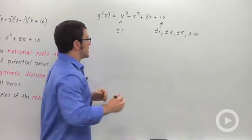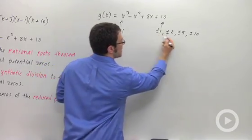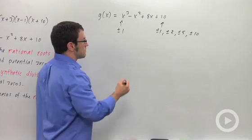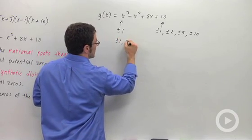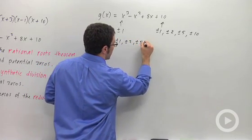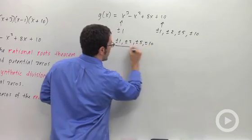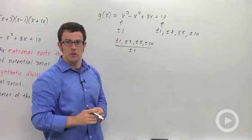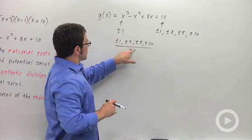Now, the rational roots theorem says that the potential zeros are these integer factors divided by these. So plus or minus 1, plus or minus 2, plus or minus 5, plus or minus 10, all over plus or minus 1. And of course, that's just going to give you the stuff on the numerator. This doesn't really contribute anything.